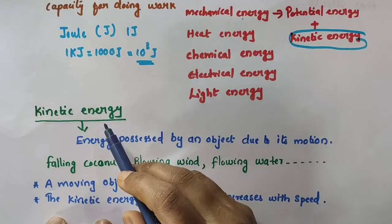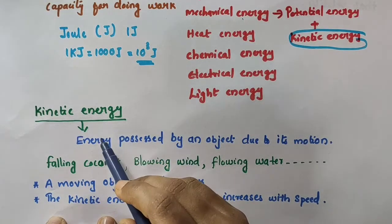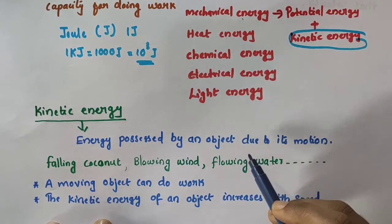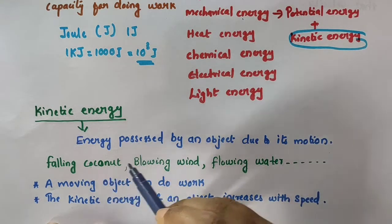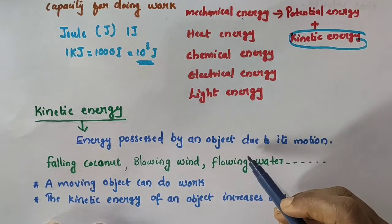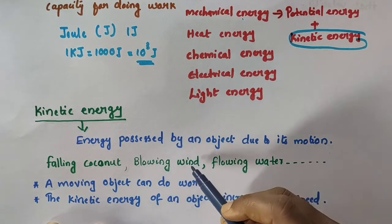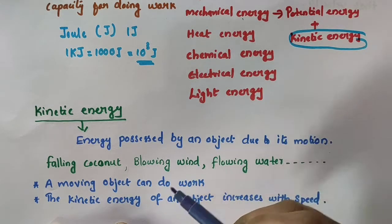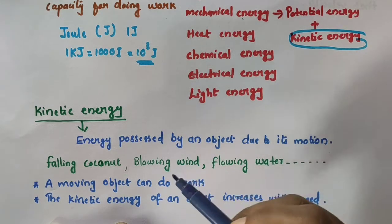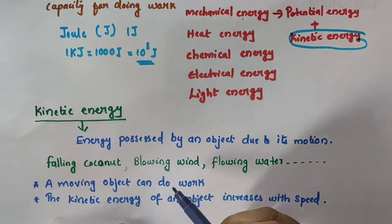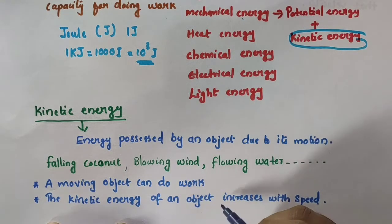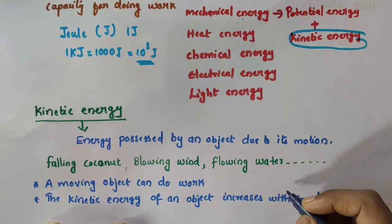Kinetic energy is the energy possessed by an object due to its motion. A falling coconut, blowing wind, flowing water, etc. possess kinetic energy. A moving object can do work because moving objects possess some kinetic energy. The kinetic energy of an object increases with its speed.